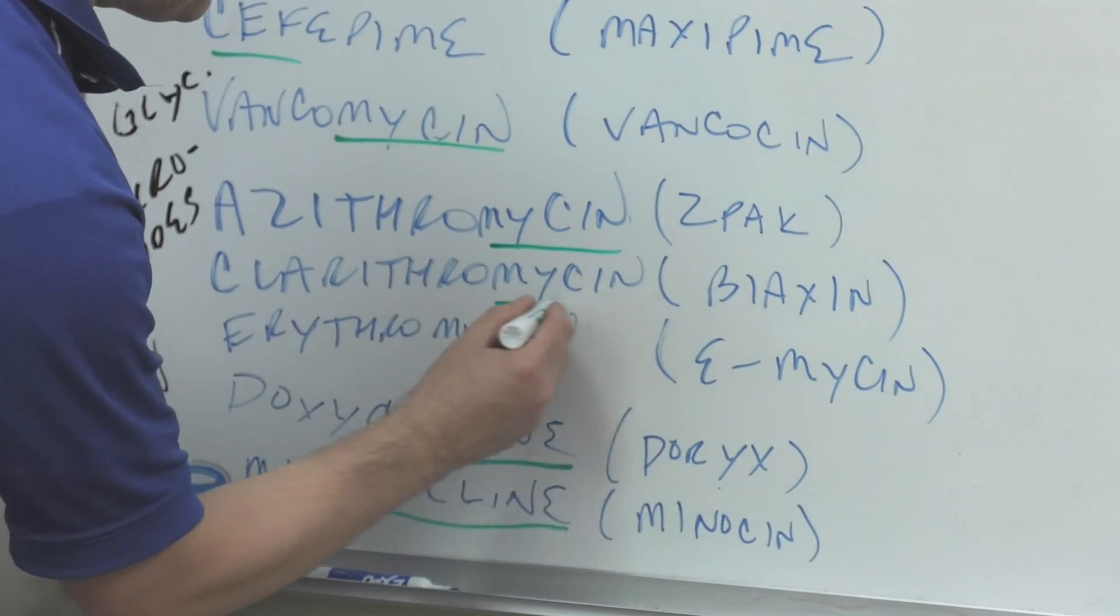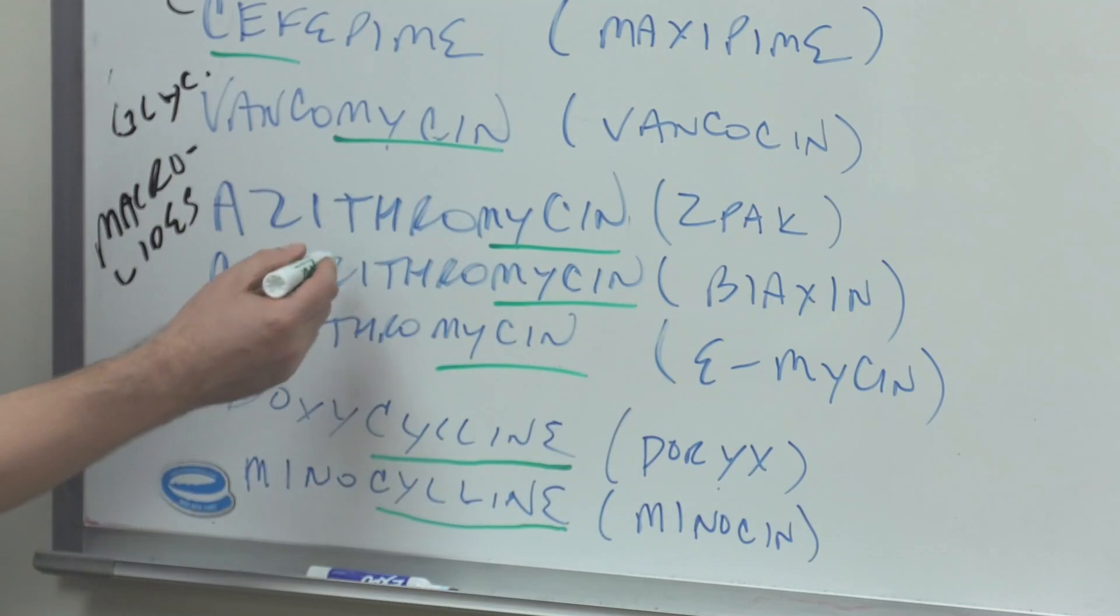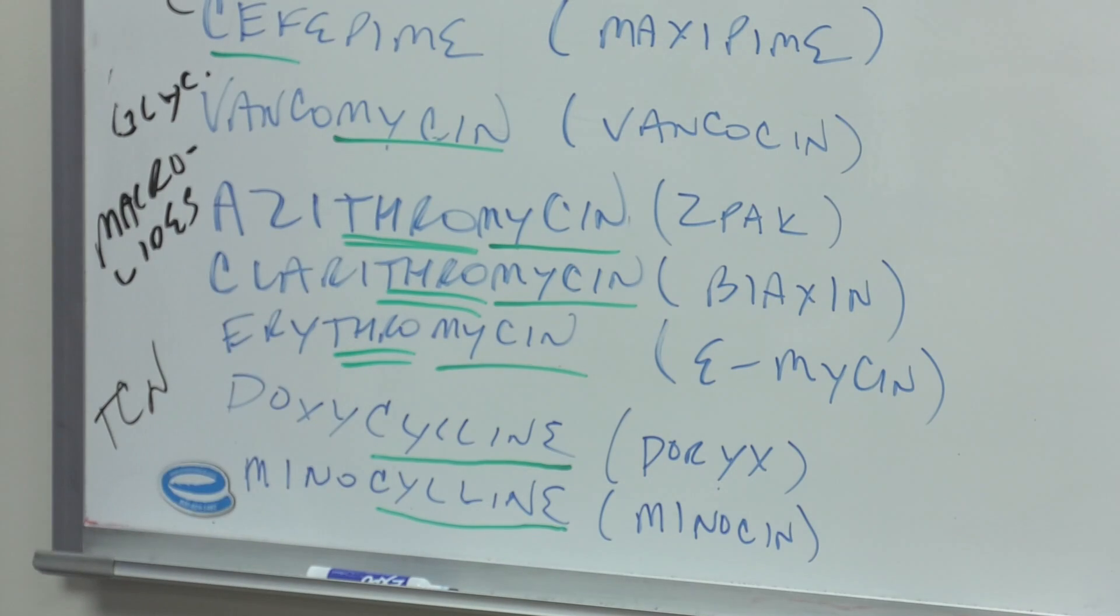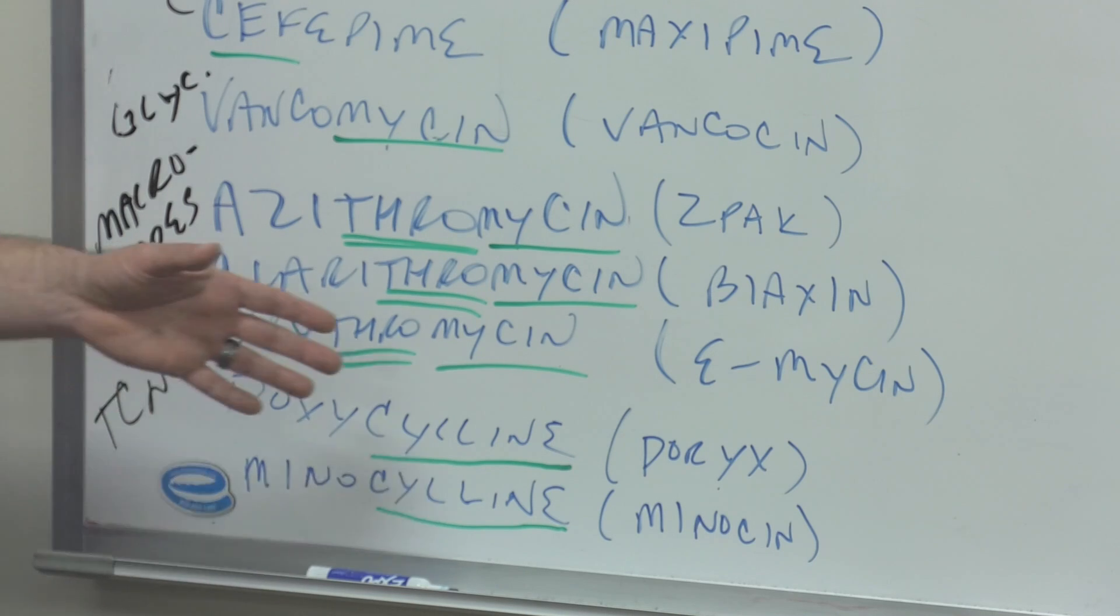Then we have the macrolides. That macro comes from just being a big molecule. This is interesting where we see the mycin, but we also see something very similar in the middle—the THRO. This might be an infix. Thromycin—you see they all have that. That's one way to think that these three are macrolides. Do all macrolides have thromycin? No, but this is a little bit helpful.